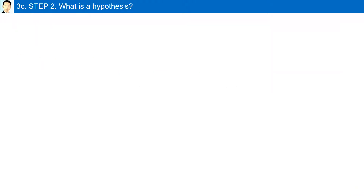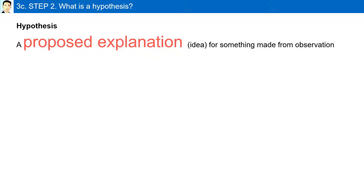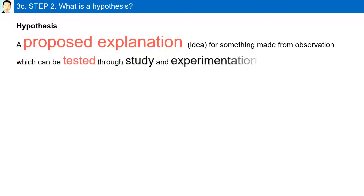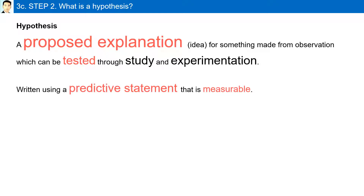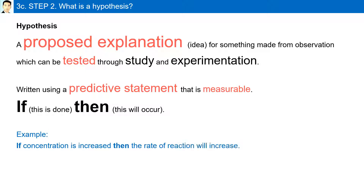What is a hypothesis? A hypothesis is a proposed explanation or idea for something made from observation, which can be tested through study and experimentation. It is usually written using a predictive statement that is measurable. It follows the format: If this is done, then this will occur. For example, if concentration is increased, then the rate of reaction will increase.